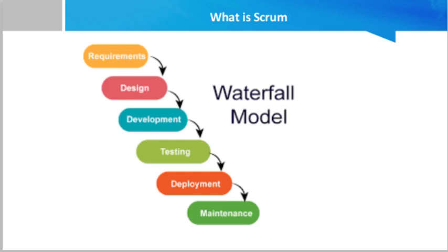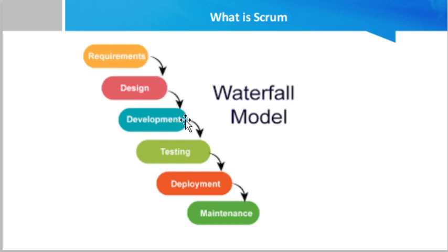The older methodology is the waterfall model. What is the waterfall model? The waterfall model is an approach used for software project management which says that first we gather all the requirements, then we do the designing of the solution, then development, then testing, then deployment, and then post-deployment support. Once the first phase finishes, the next phase starts — it is a sequential approach.